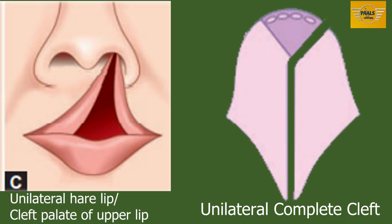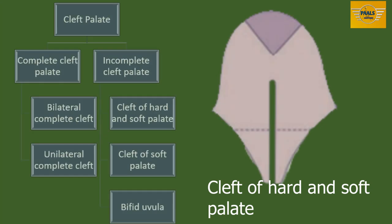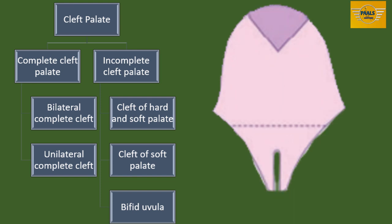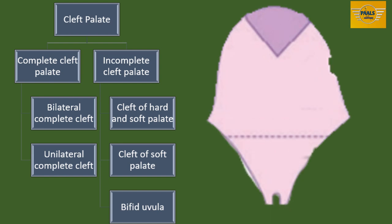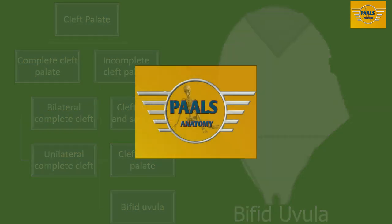Now the incomplete cleft palate. Cleft of hard and soft palate is when the cleft runs through the entire soft palate and is limited in the hard palate. In cleft of the soft palate, the cleft is limited to the soft palate. Bifid uvula is a condition where the cleft is limited to the uvular part of the soft palate.